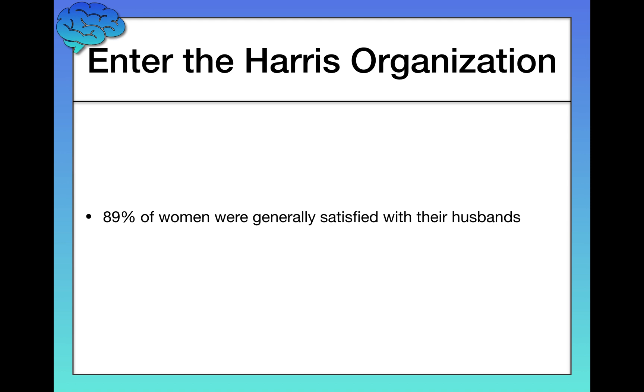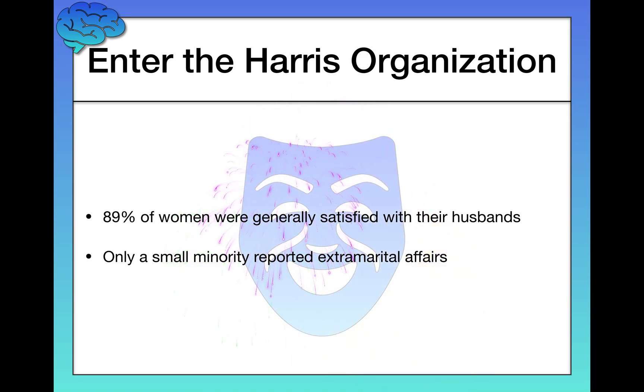Again, exact opposite results just on the basis of using a different selection method for who gets to participate in your study. And finally, they found that only a small minority of people, of women in particular, reported extramarital affairs. So in this case, we're a little bit relieved. Using an appropriate selection method, we get results that are a little bit more believable and certainly much less scary.